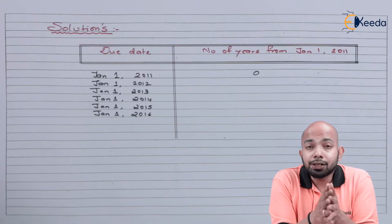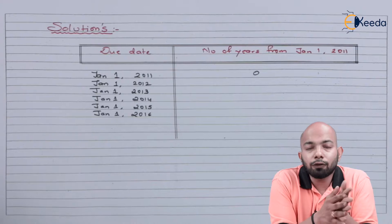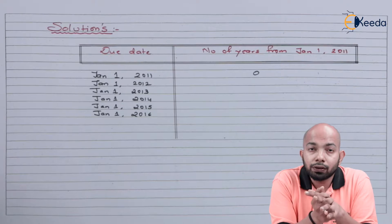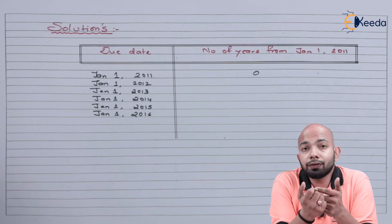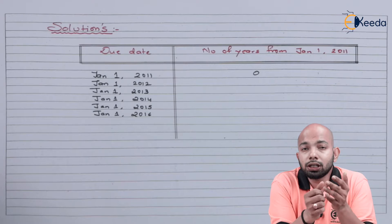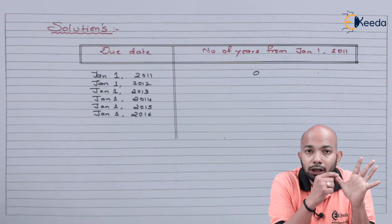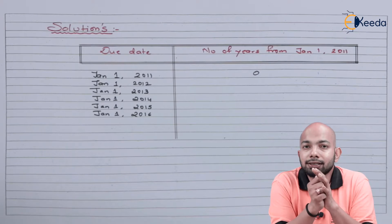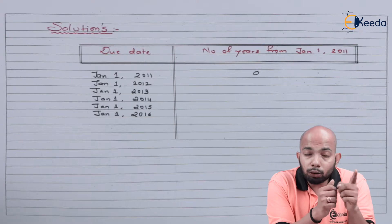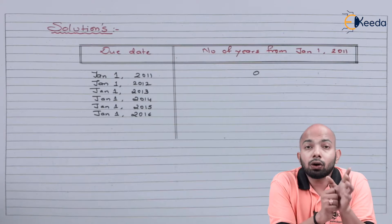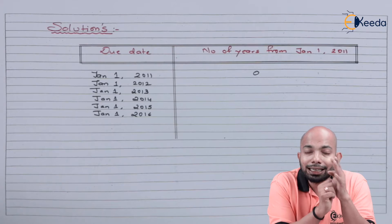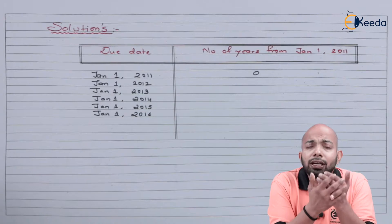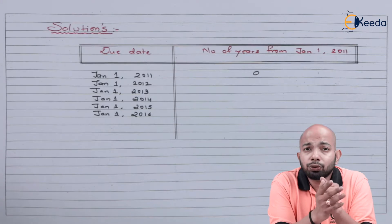The EMI due dates start from 1st January 2012, with the date remaining January 1st but the years changing. So the five due dates are 2012, 2013, 2014, 2015, and 2016. From the loan sanction date — 1st January 2011 — we calculate how many years have passed until each of these due dates, and that is what we take into consideration.